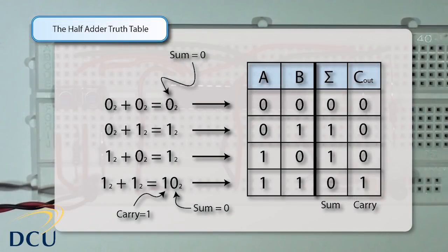Here is the truth table for the half adder. On the left hand side we have 0 plus 0 equals 0. The 0 on the left hand side of the plus sign is A, and 0 on the right hand side is B. We use sigma to denote the sum, and C_out to represent the carry out. So: 0 plus 0 gives sum 0, carry 0; 0 plus 1 gives sum 1, carry 0; 1 plus 0 gives sum 1, carry 0; and 1 plus 1 gives sum 0 with a carry of 1.